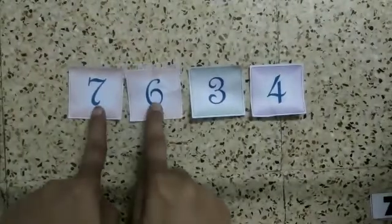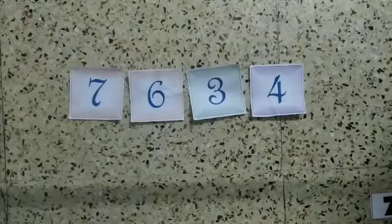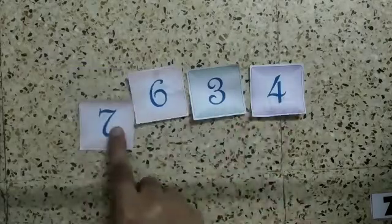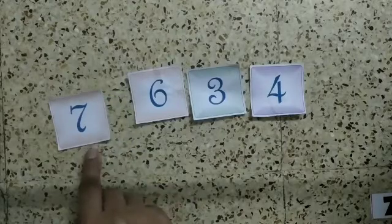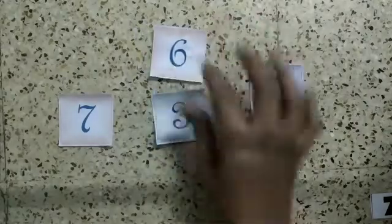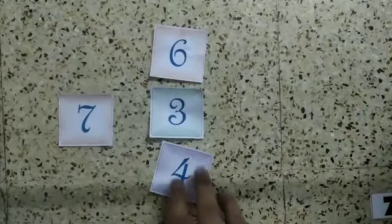So here we have 7, 6, 3 and 4. This is for an example. First we will take one number here, that is 7, and we are going to make a list for this 7 number. All these numbers we are going to make into two digit numbers. So what are the possible two digit numbers?